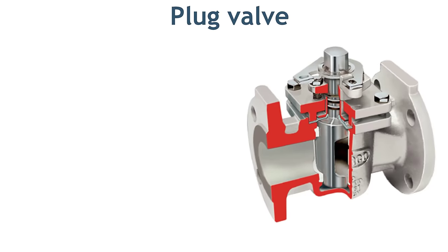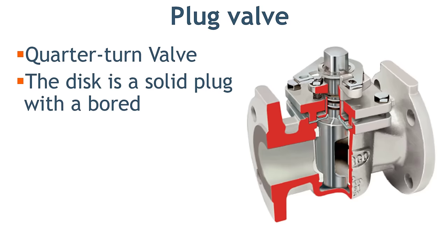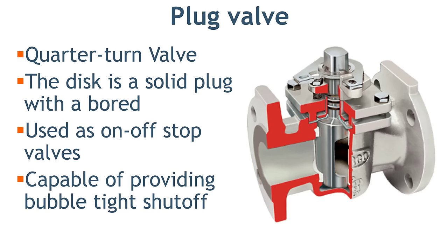Plug valve is a quarter-turn rotary motion valve that uses a taper or cylindrical plug to stop or start the flow. The disk is in a plug shape which has a passage to pass the flow. Plug valve is used as an on-off stop valve and capable of providing bubble-tight shutoff. Plug valve can be used in vacuum to high pressure and temperature applications.